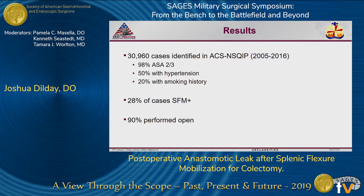Our total results included over 30,000 cases. 98% had an ASA of either 2 or 3; 50% had hypertension; and 20% had a previous history of smoking. 28% of distal colon resection cases had a concomitant splenic flexor mobilization at the time of operation. 90% of all identified colorectal procedures were performed by an open approach, with the minority performed laparoscopically or robotically.